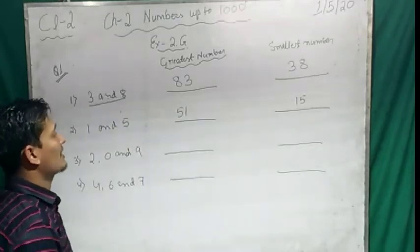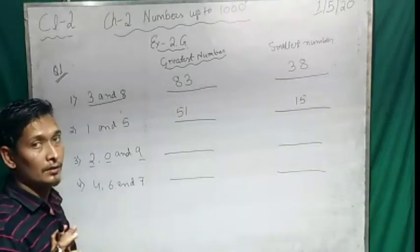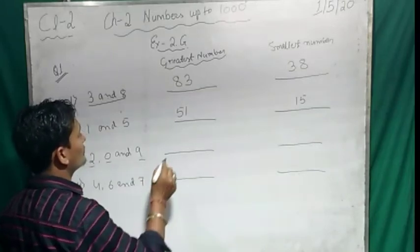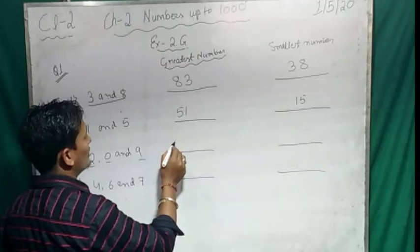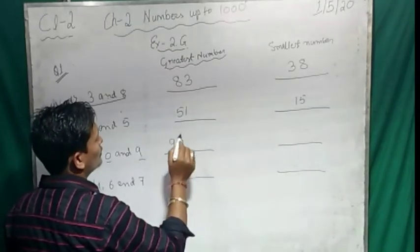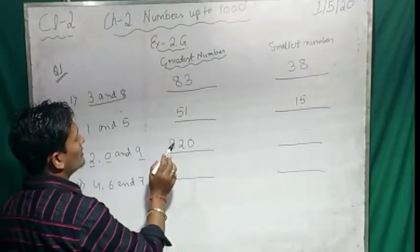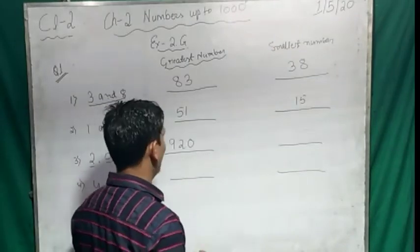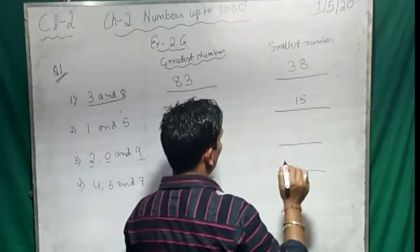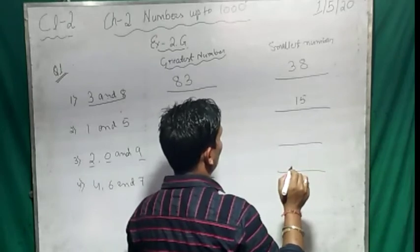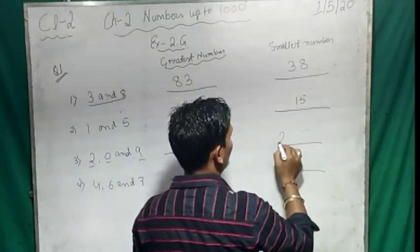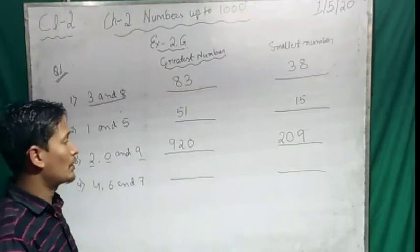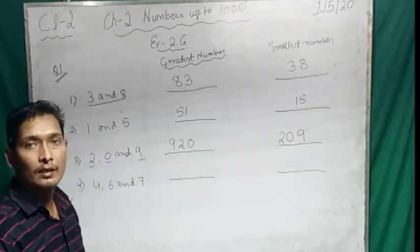Question 3: digits 9, 0, and 2. For the greatest number, we start with 9, then 2, then 0 — that is 920. For the smallest, remember 0 cannot come first in a 3-digit number. So we start with 2, then write 0 in the middle, then 9. So 209 is the smallest and 920 is the greatest number.